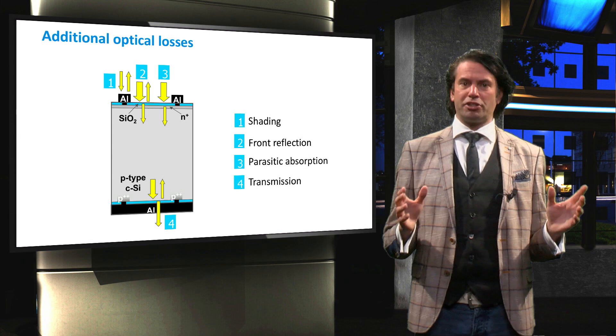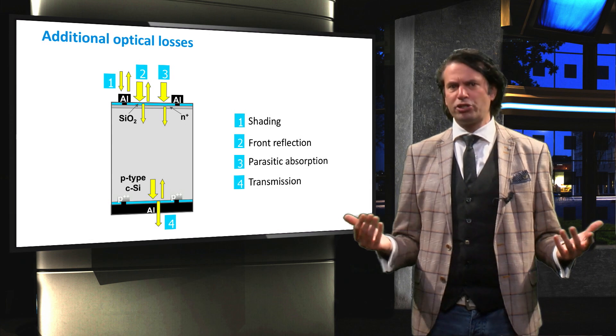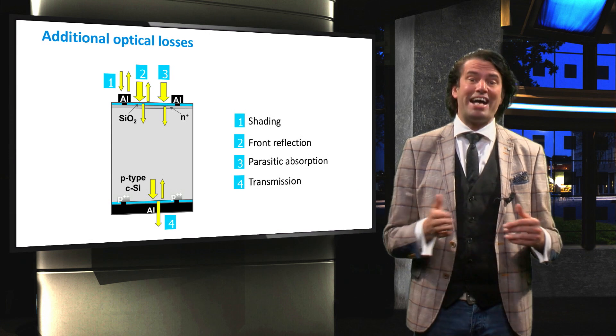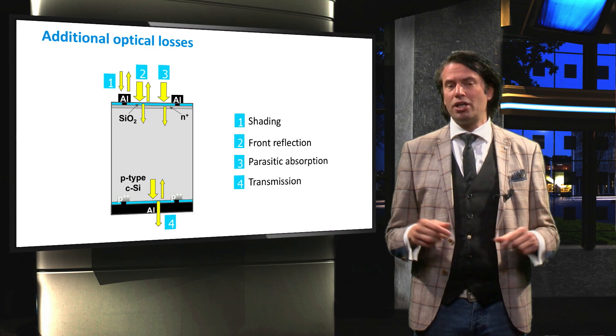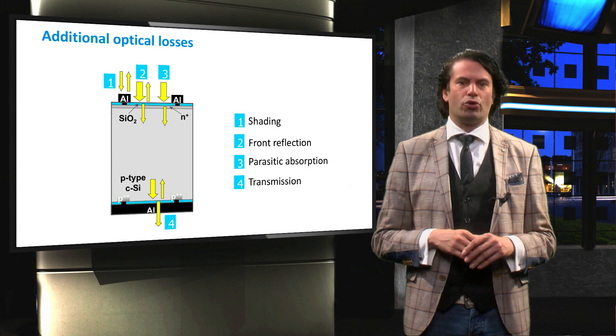Finally, we consider the transmission losses. Transmission losses are caused by photons passing through the solar cell without being absorbed, due to the limited optical thickness of the solar cell.